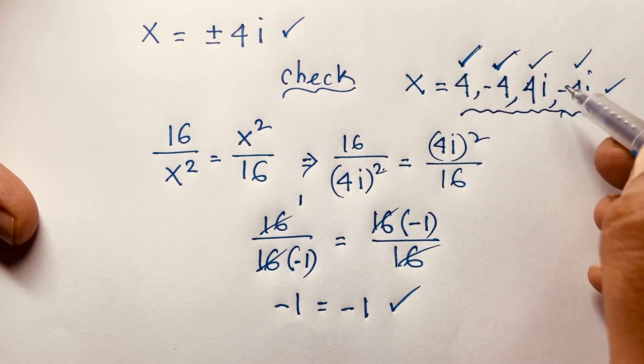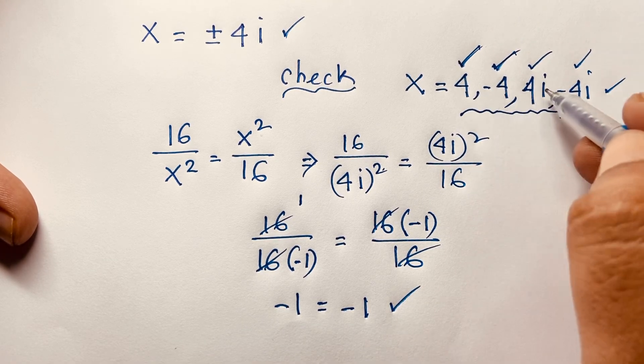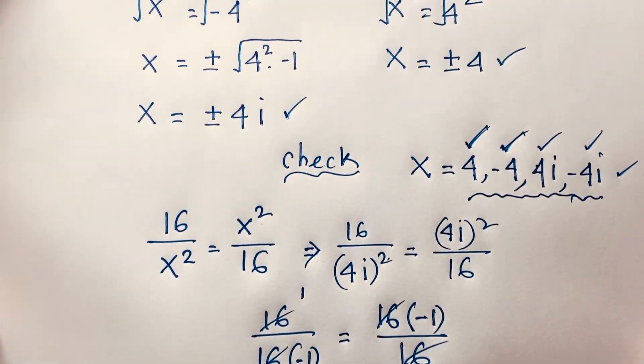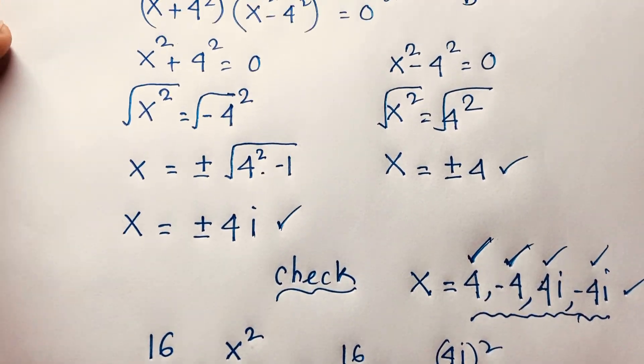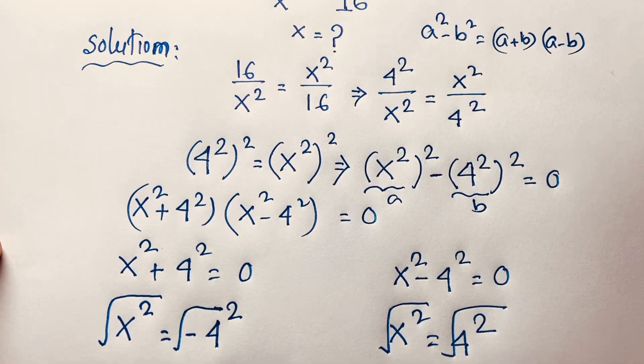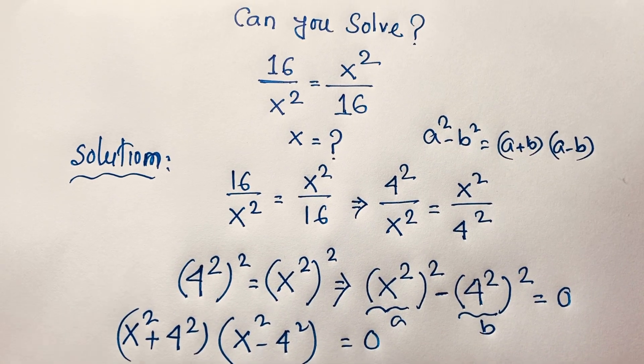This is our final answer for this math problem. x equals plus or minus 4 are the real solutions, and x equals plus or minus 4i are the complex solutions. Thank you all — if you enjoyed this math question, please subscribe to my channel for other interesting videos. Goodbye, take care.